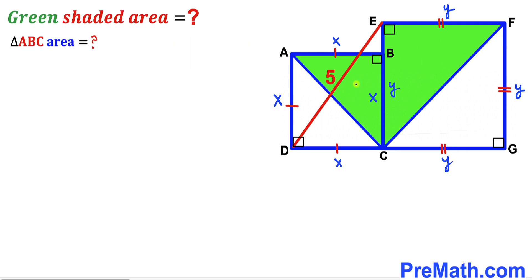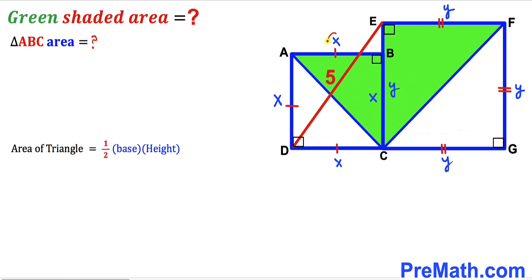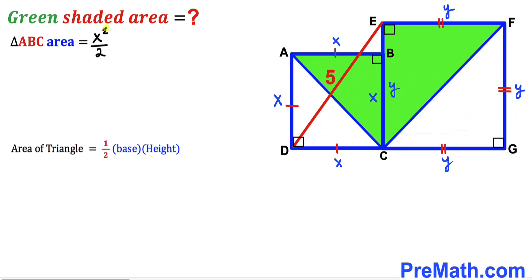Let's focus on triangle ABC and calculate its area. Recalling the area of a triangle formula: area = (1/2) × base × height. The base of triangle ABC is X and the height is also X. So the area of triangle ABC is (1/2) × X × X, which simplifies to X² / 2.